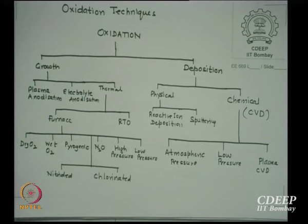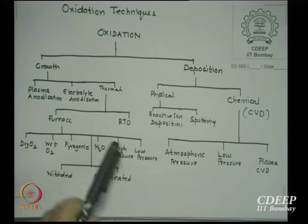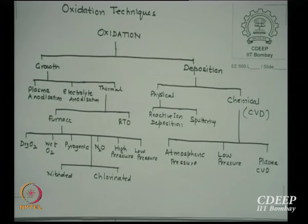For N2O oxidation: N2O + Si → SiO2 + N2, which is not very different from standard oxidation. For high pressure oxidation — called a bomb process — you put water vapours or water solution in a sealed tube and heat it; pressure builds up, allowing very fast oxide growth. A very short time can grow thicker oxides, but this is essentially used in some older processes.